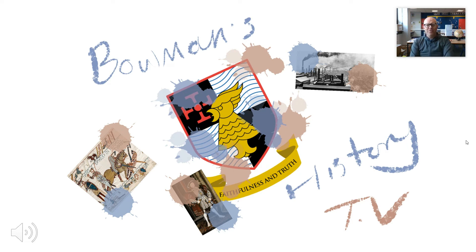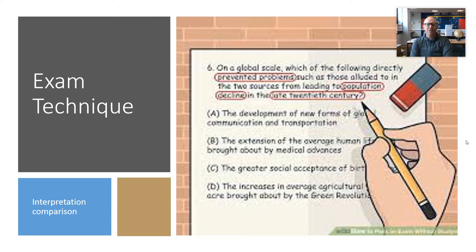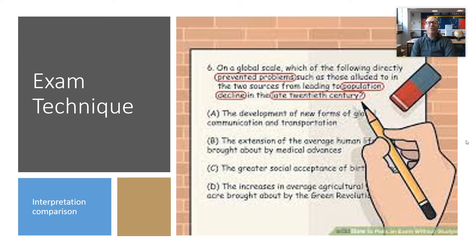Hello and welcome back to Bowman's Heaven History TV. Today we're going to have another look at an exam technique — specifically interpretation comparisons. An interpretation is somebody's view of something that happened in the past, and in many parts of the exam you will be asked to look at some interpretations and pass judgment on them. Today we're looking at when you are given two interpretations and have to compare them, focusing on how and why they differ.